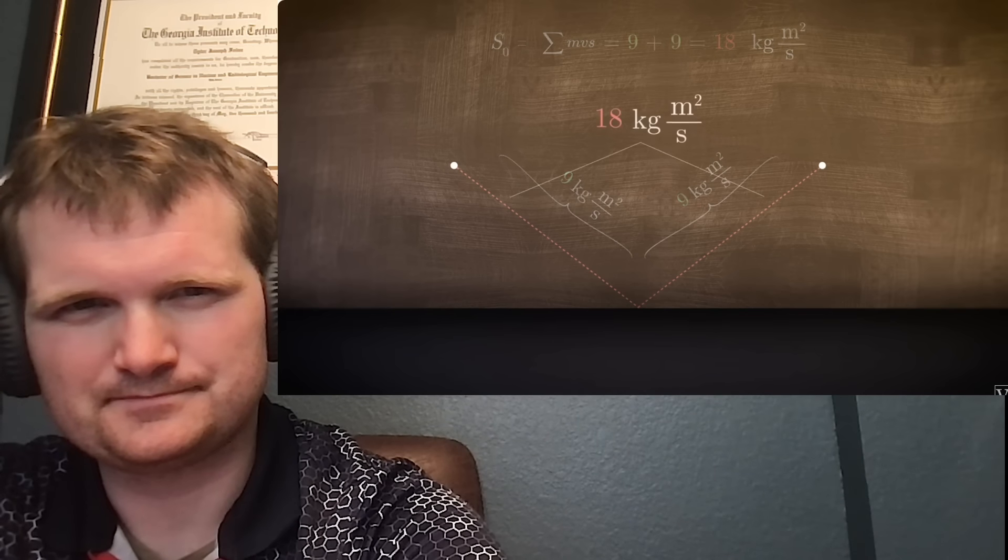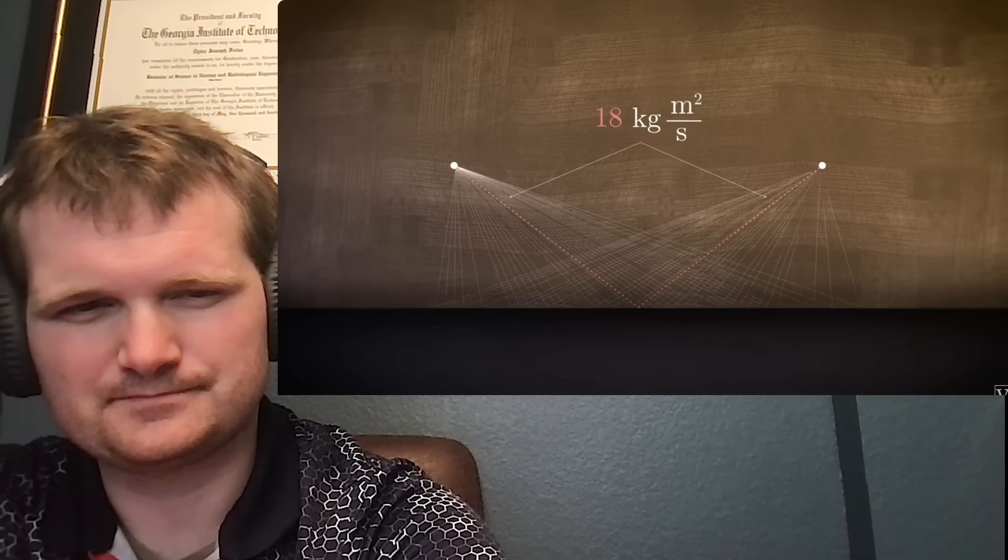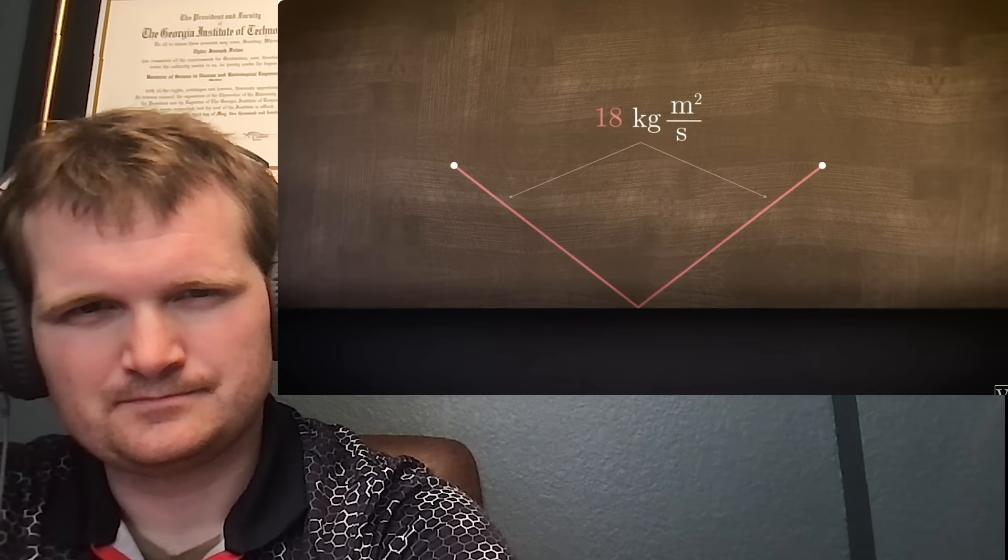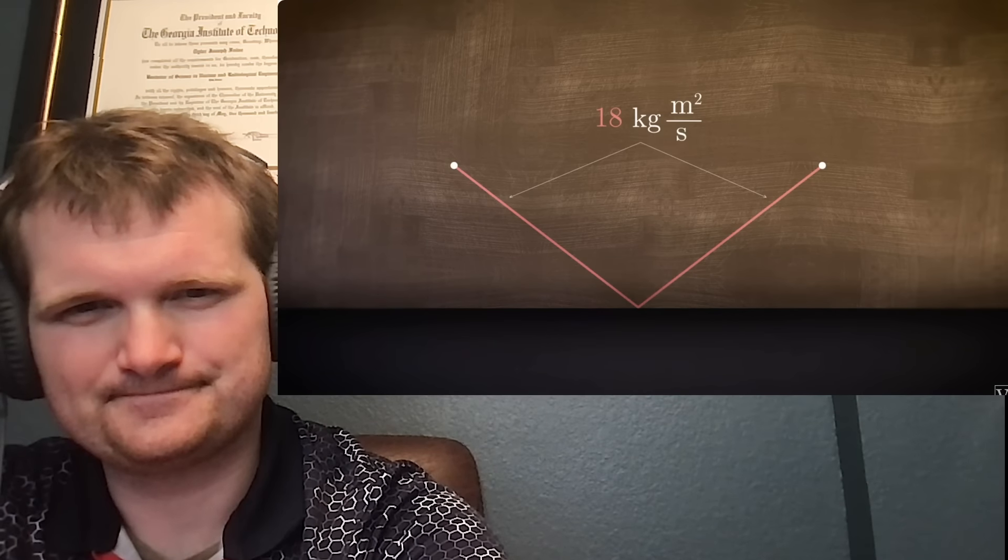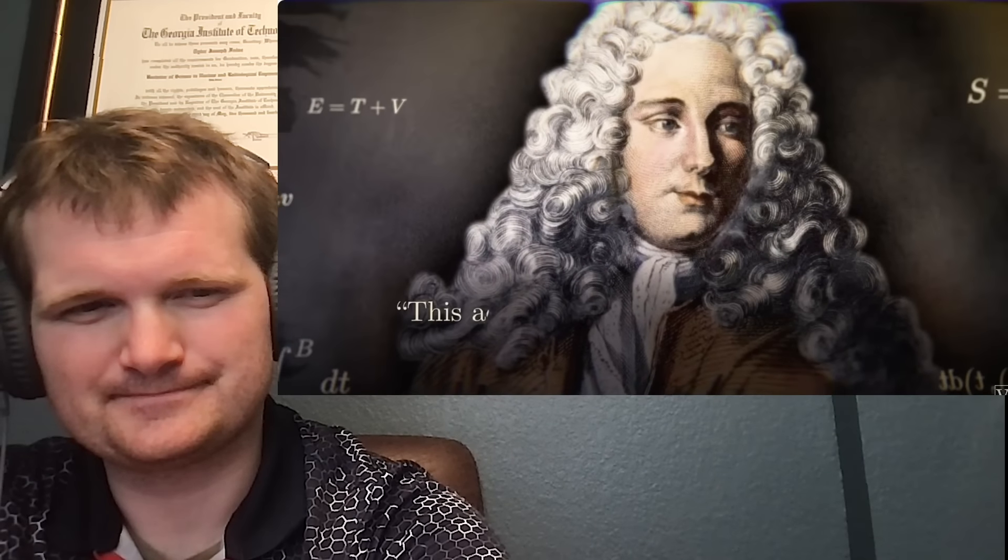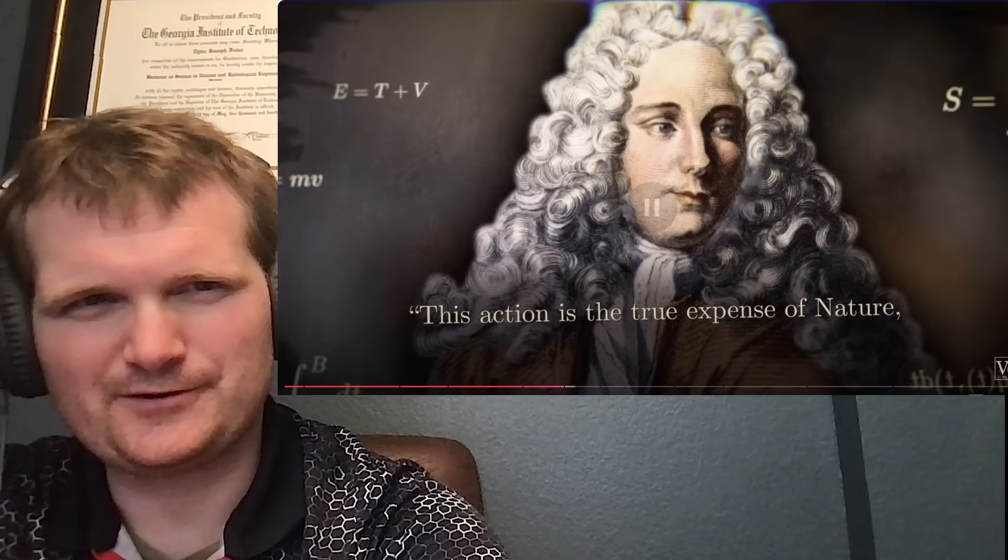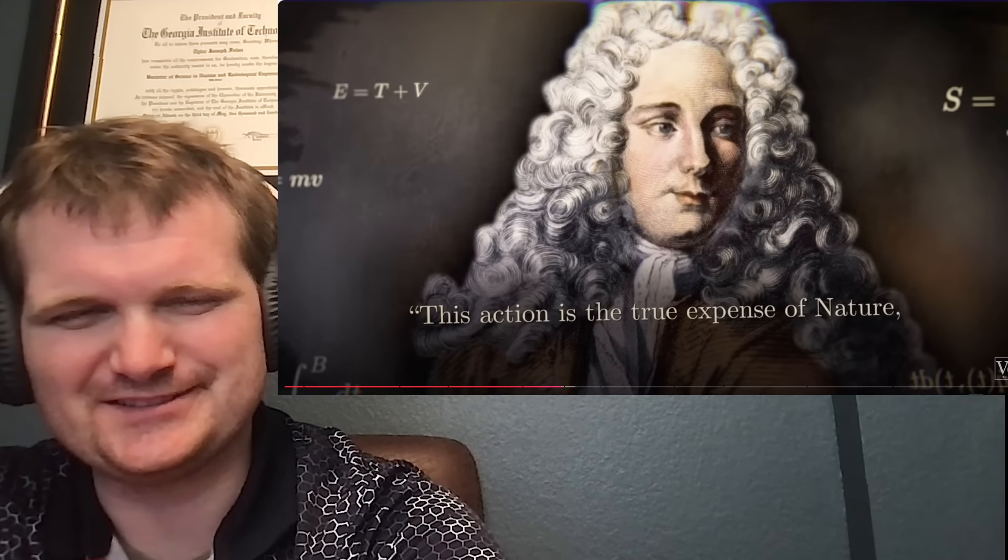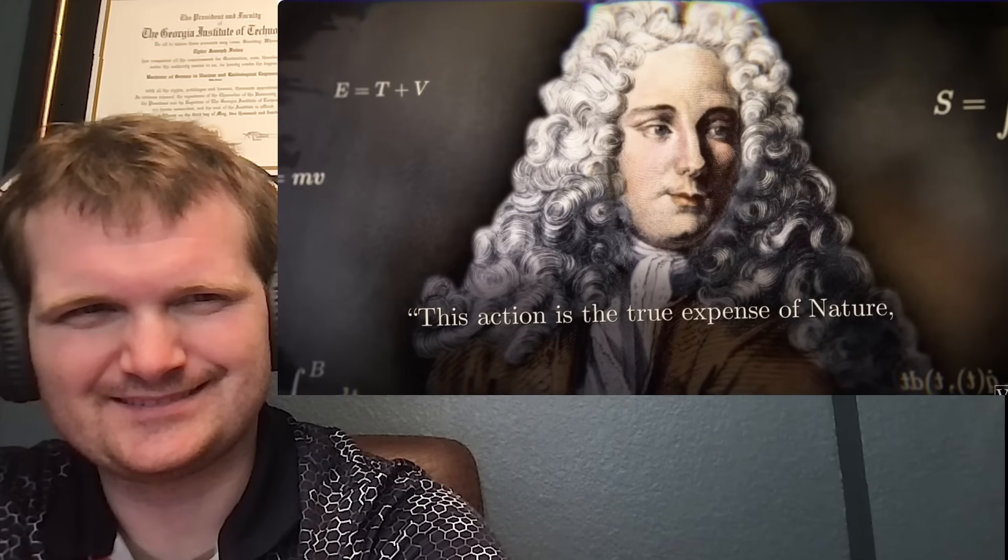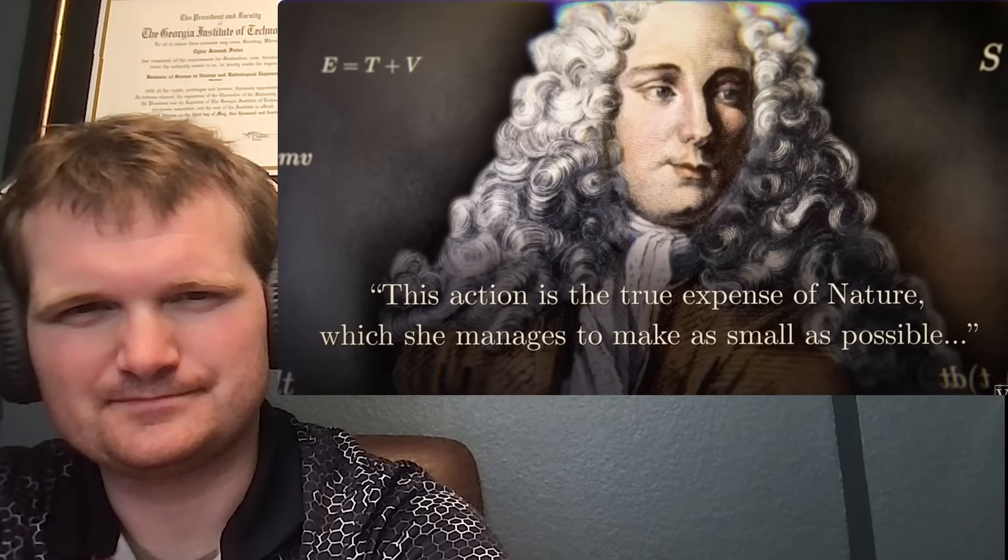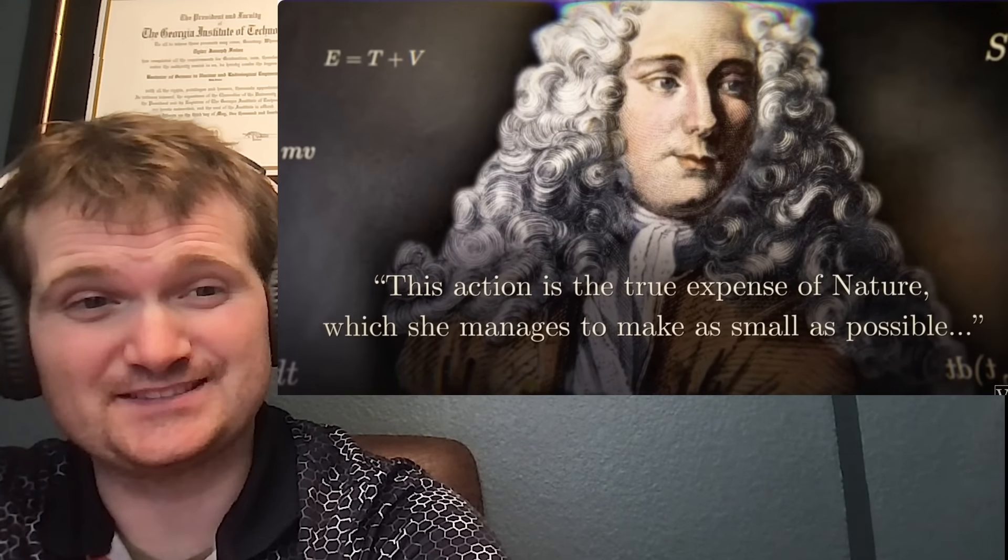Interesting. If it travels another 6 meters at 3 meters per second, then the action for the whole trip is 9 plus 9, or 18, units of action. Now, what Maupertuis claimed is that out of all possible trajectories where the ball bounces off the wall, the path it will follow is the one that minimizes the action. In 1744, he wrote, I've never heard it expressed as action, though. And I know it's just the same dimensions, but still. This action is the true expense of nature, which she manages to make as small as possible. That's philosophical.